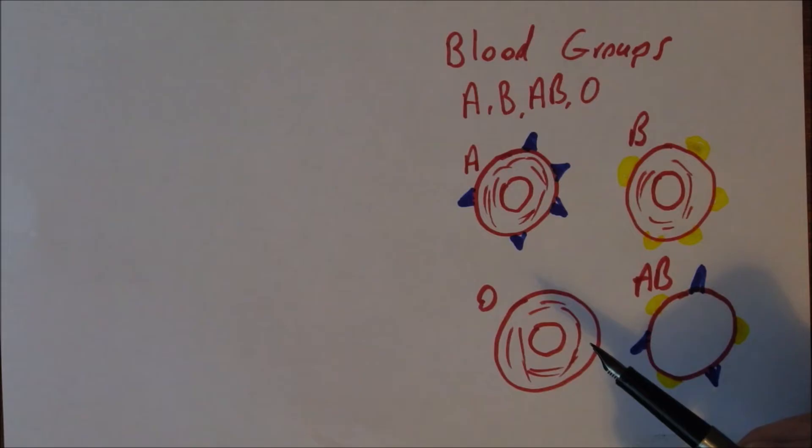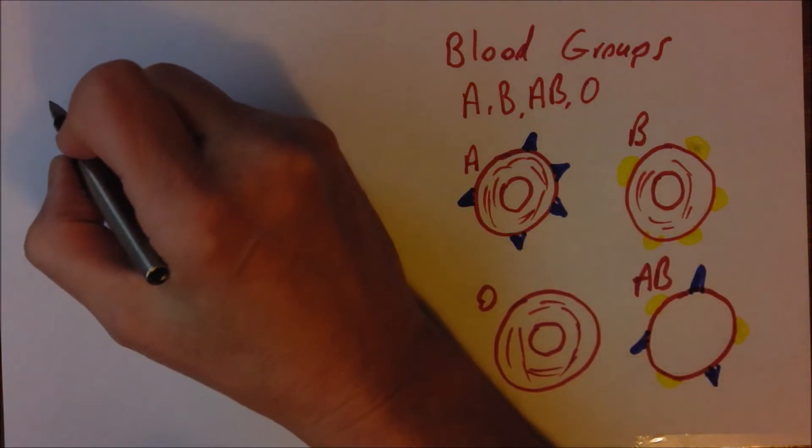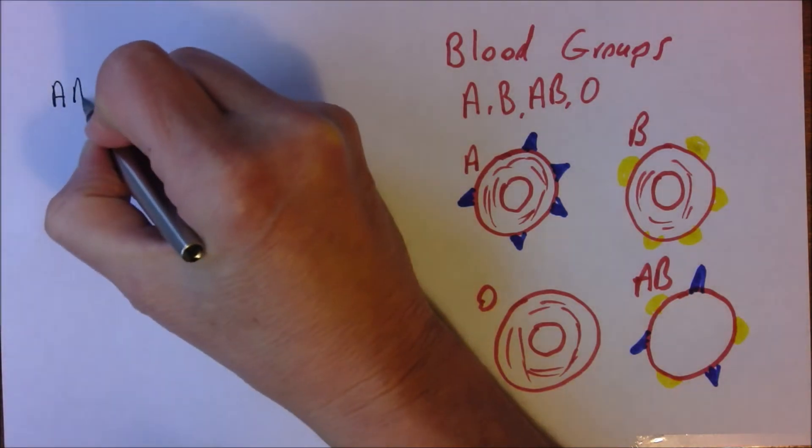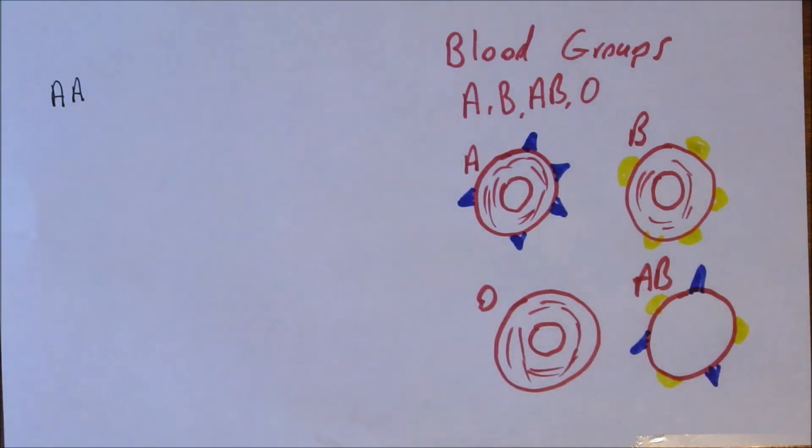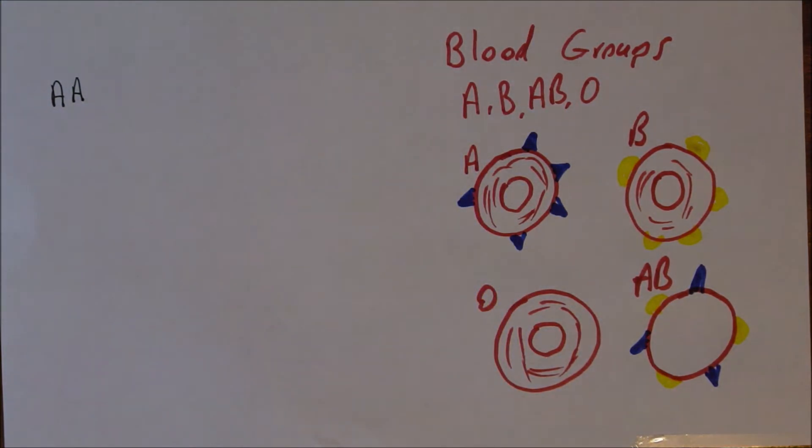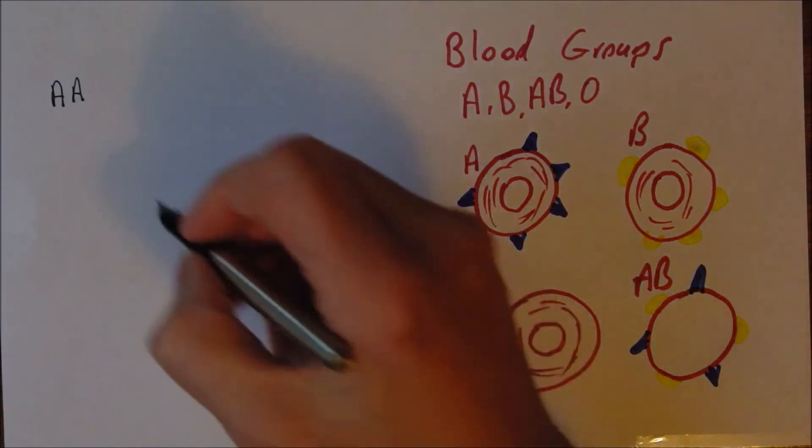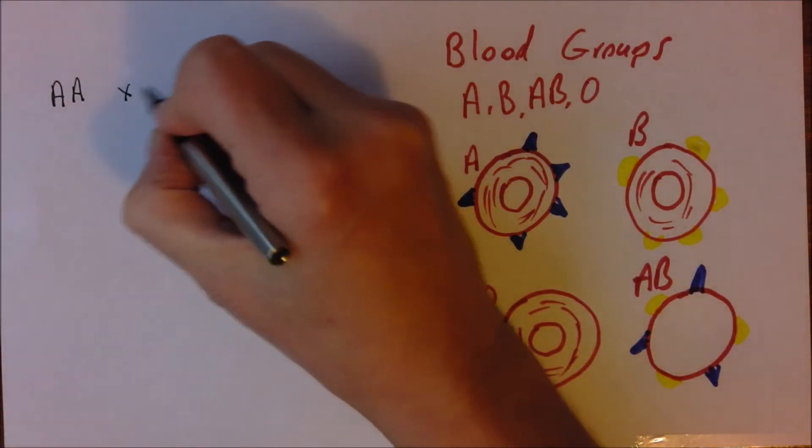The A, B and zero alleles. So let's think of an example. Let's suppose we have someone who's blood group A and let's suppose they are genotypically homozygous for the blood group and they reproduce with someone who is blood group O.